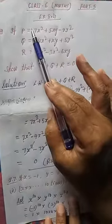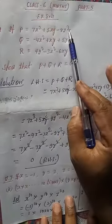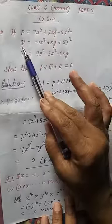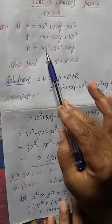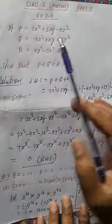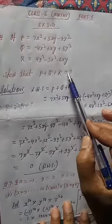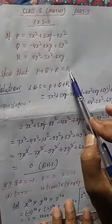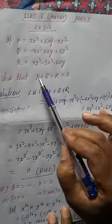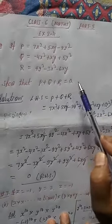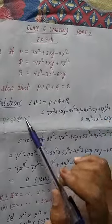If P is equal to 7x squared plus 5xy minus 9y squared — this is given. Q is also given, and R is also given. The question is to show that P plus Q plus R is equal to 0. It means we need to prove that after adding P plus Q plus R, the result will be 0. Now let us see the solution.